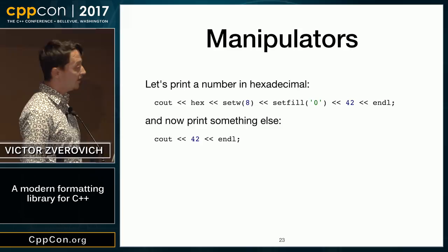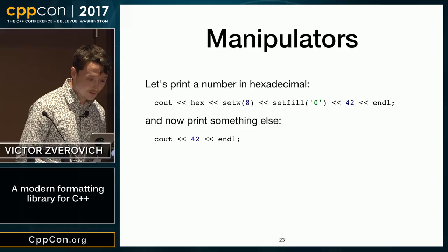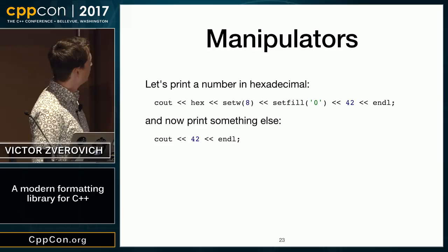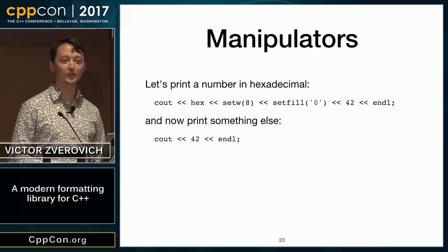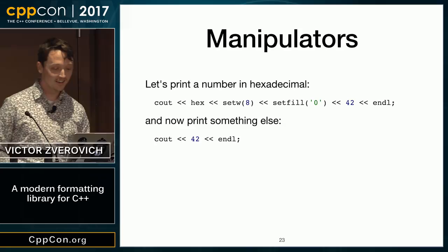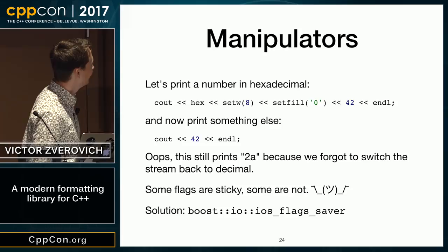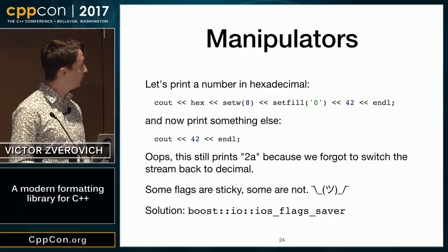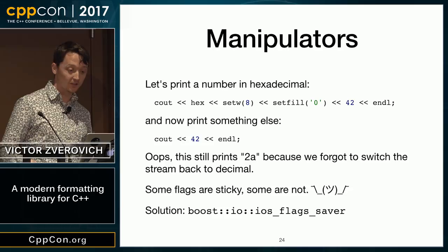Now let's take a look at IOManipulators. In the first line we print out some integer in hexadecimal, and then we try to print something else. It will print out 2a, obviously, because we didn't switch back to decimal. Some flags are sticky, some are not — go figure. The solution is to use Boost.IO iOS flag saver, but it's a bit annoying. Ideally, formatting functions, when you call them, shouldn't produce any side effects other than the output itself.